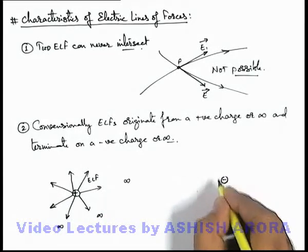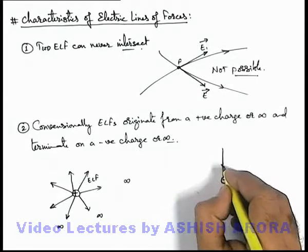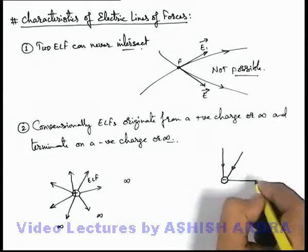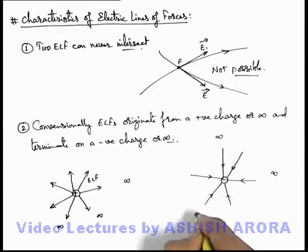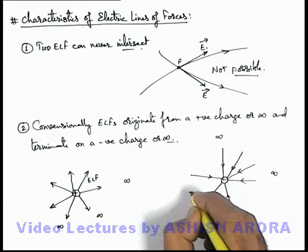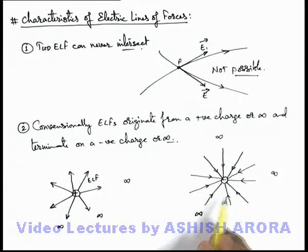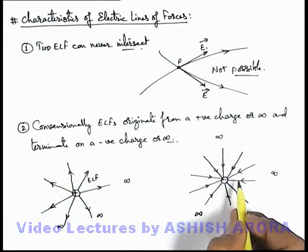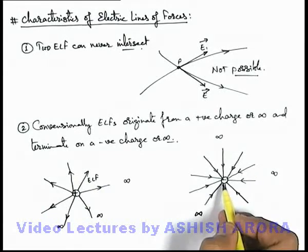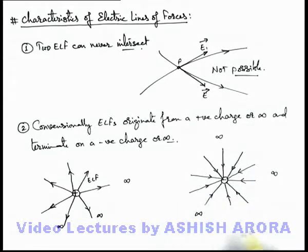Similarly, if there is a negative charge, we know that in the surrounding of a negative charge the electric field exists in the radially inward direction. That means the electric lines in its surrounding will be in a radially inward fashion, and all these lines are originated from infinity and finally are absorbed by the negative charge — or we say these are terminated on a negative charge. So the fashion is: from a positive charge lines originate and move to infinity, while around a negative charge these electric lines are terminating, originated from infinity.